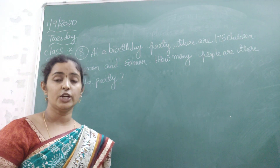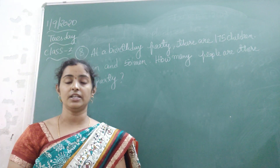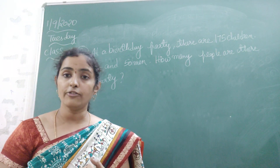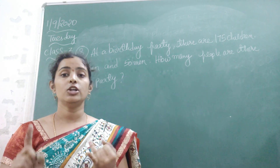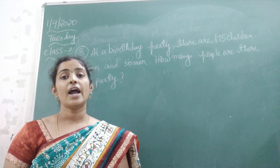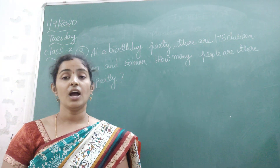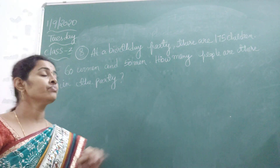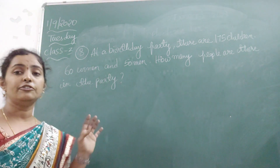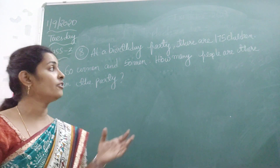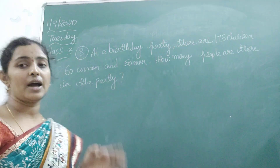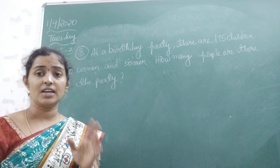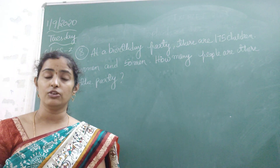So here the question is about a birthday party. Here total number of men, total number of women, and total number of children are given. So here we need to find out the total number of people at the party. How many people are there in the party? We need to find out.